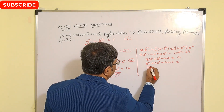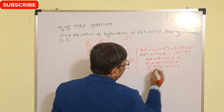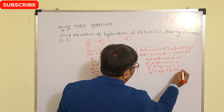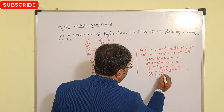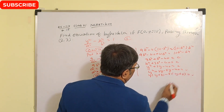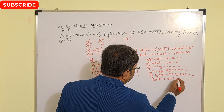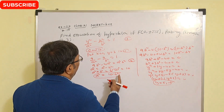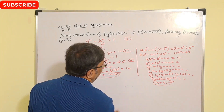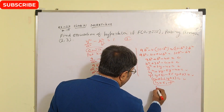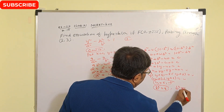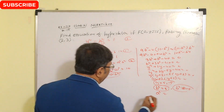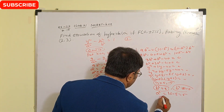Let b² = y, so the equation becomes y² + 3y − 40 = 0. Factoring: y² + 8y − 5y − 40 = 0, giving (y − 5)(y + 8) = 0. So y = 5 or y = −8. Since b² cannot be negative, we take b² = 5. Then a² = 10 − b² = 10 − 5 = 5.